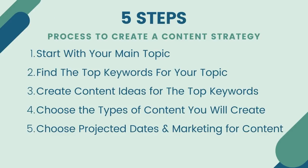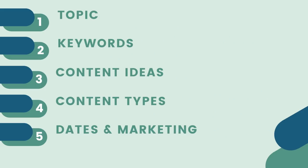To make it really simple: one is topic, two is keywords, three is content ideas, four is content types, and five is dates and marketing.